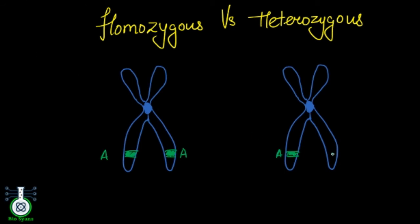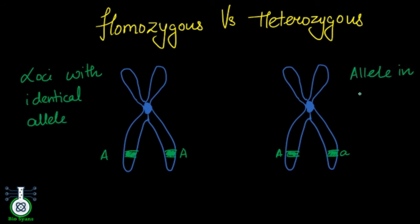Trait means character, or in this case we can say that the loci with identical alleles are the homozygous condition, and the alleles in one locus that differ resemble the heterozygous condition. For example, the locus of eye color gene.